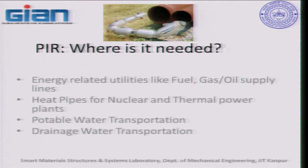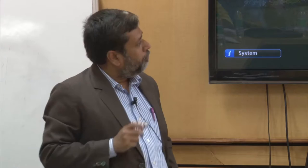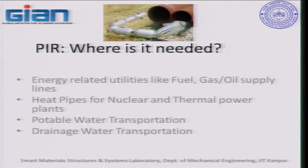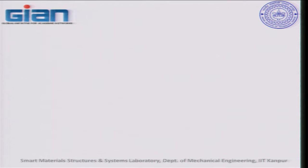Heat pipes for nuclear and thermal power plants are also a very rich field of application. In fact, the first series of pipe inspection robots was designed for nuclear power plants to investigate if there is leakage in the pipeline. So the earliest reference of pipe investigation robots in the literature is related to nuclear power plants. However, we will mostly talk about energy-related utilities like fuel, gas, or oil supply lines.